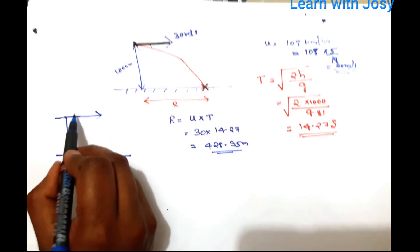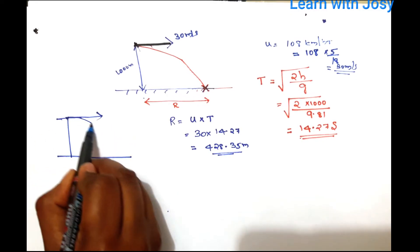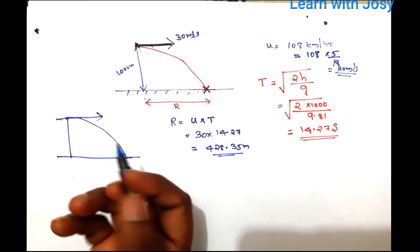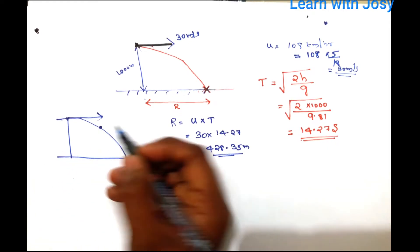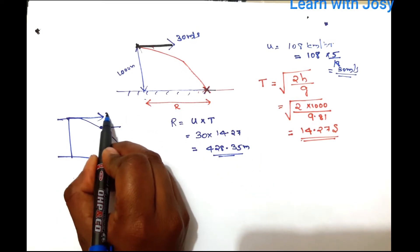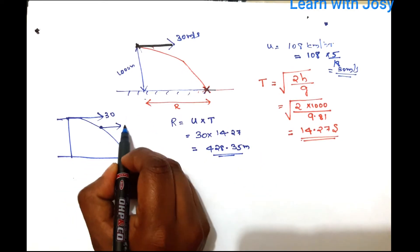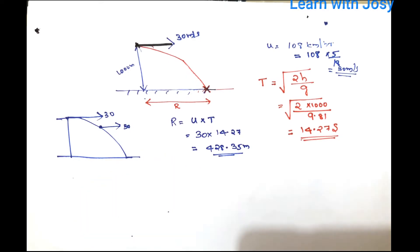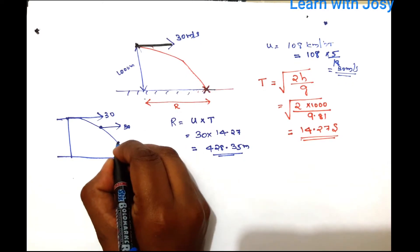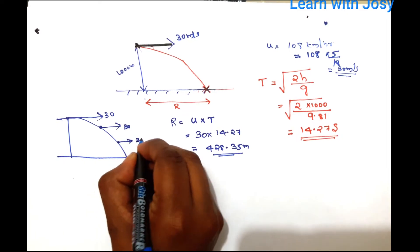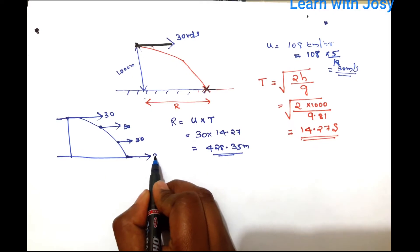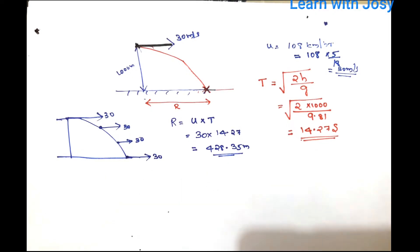We look at the trajectory path. The horizontal velocity remains the same at all points because we are neglecting air friction. The horizontal velocity is 30 meters per second throughout.